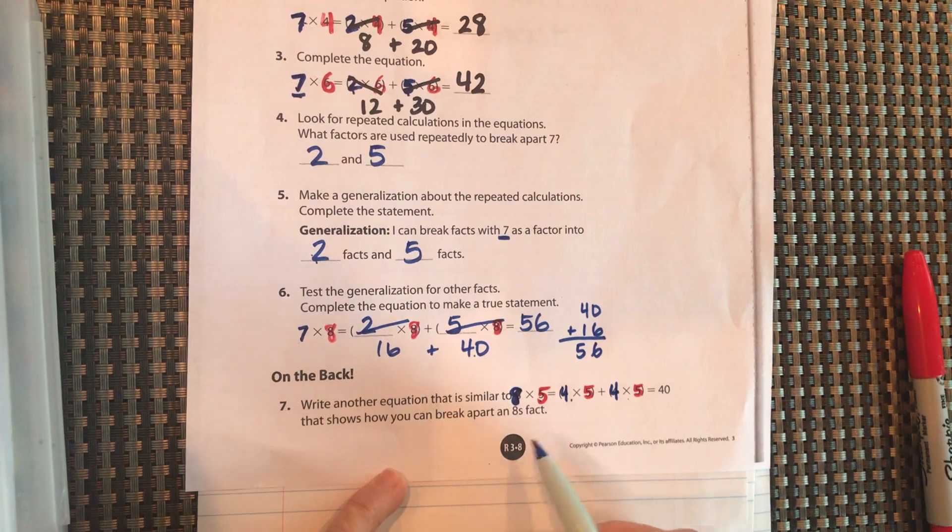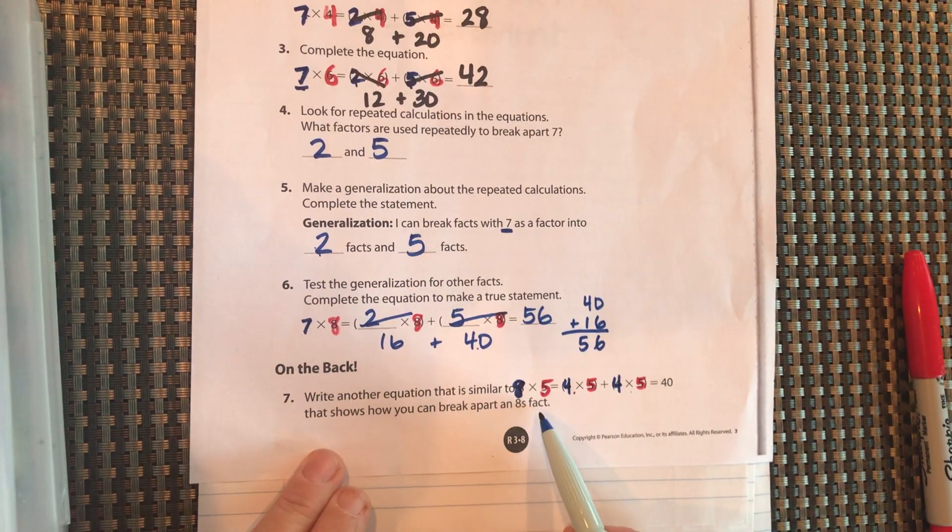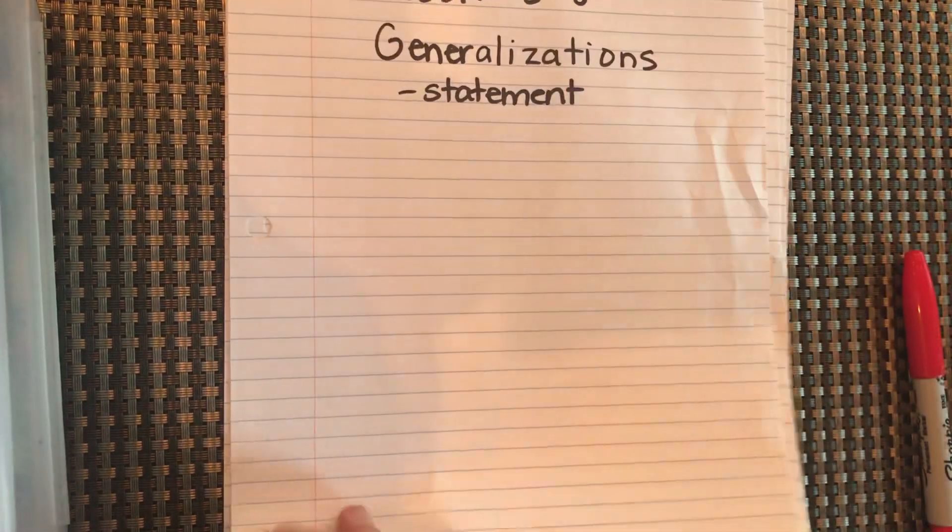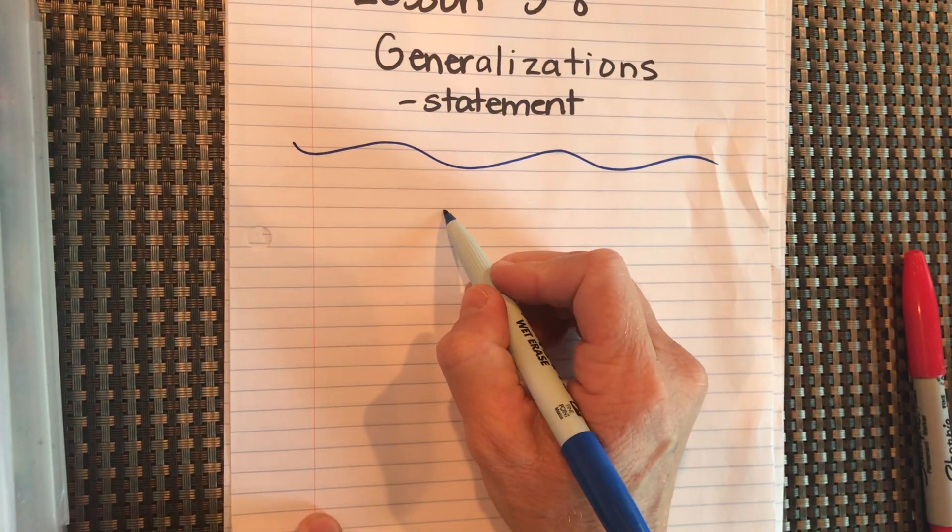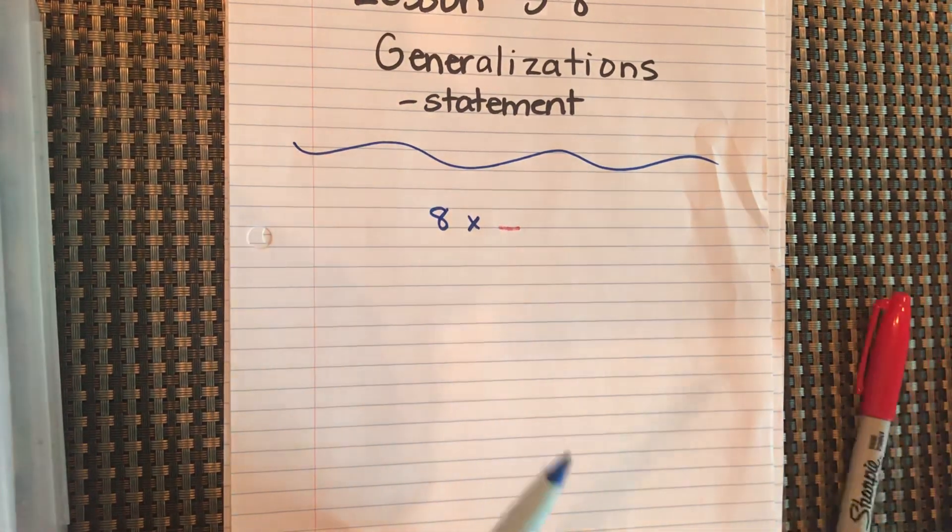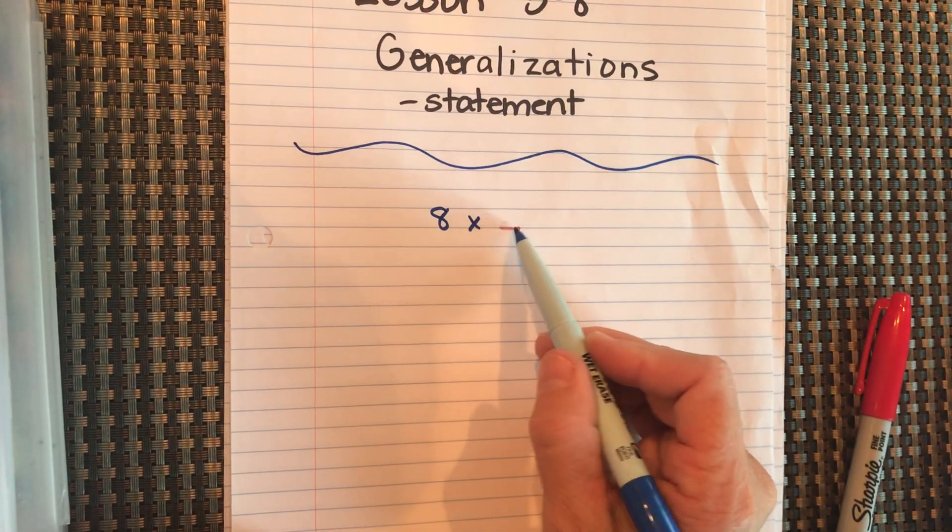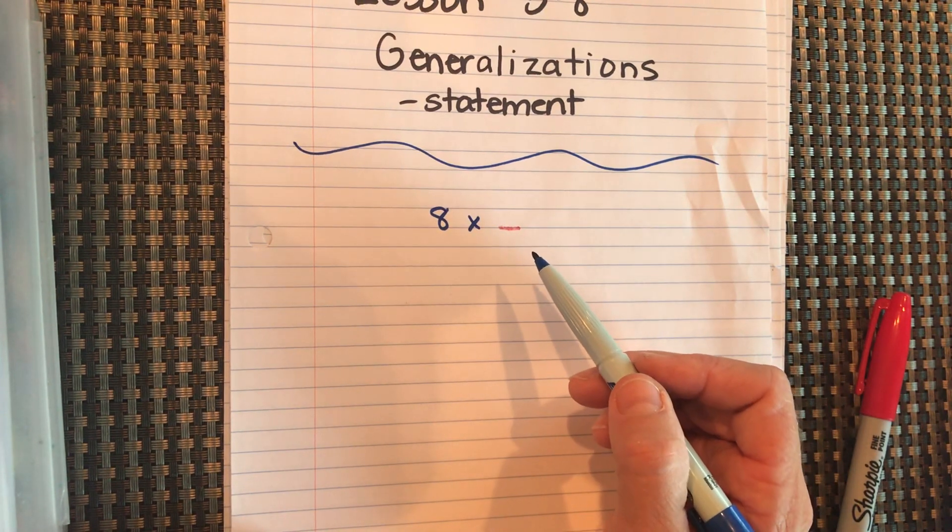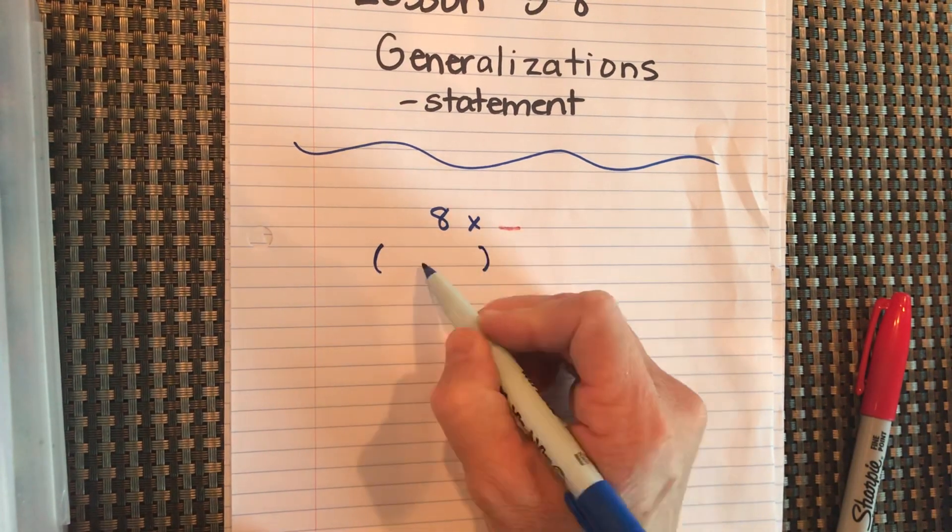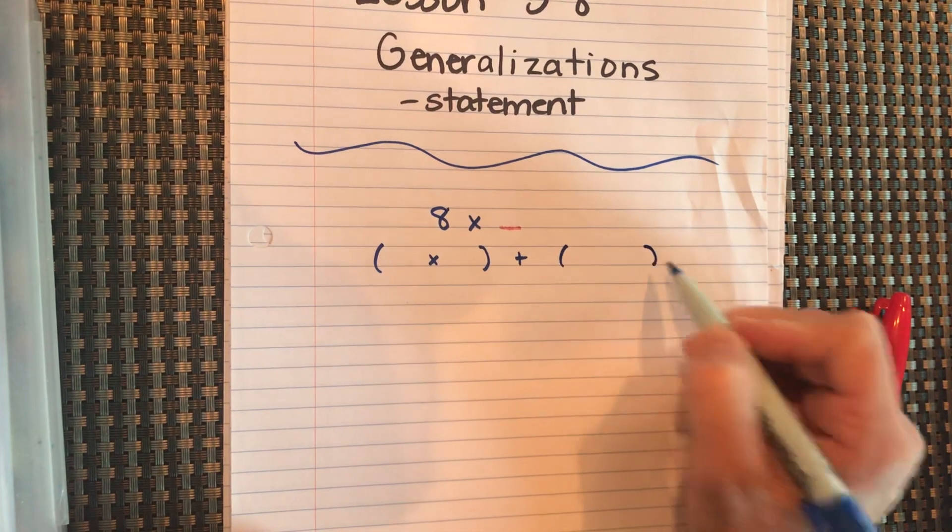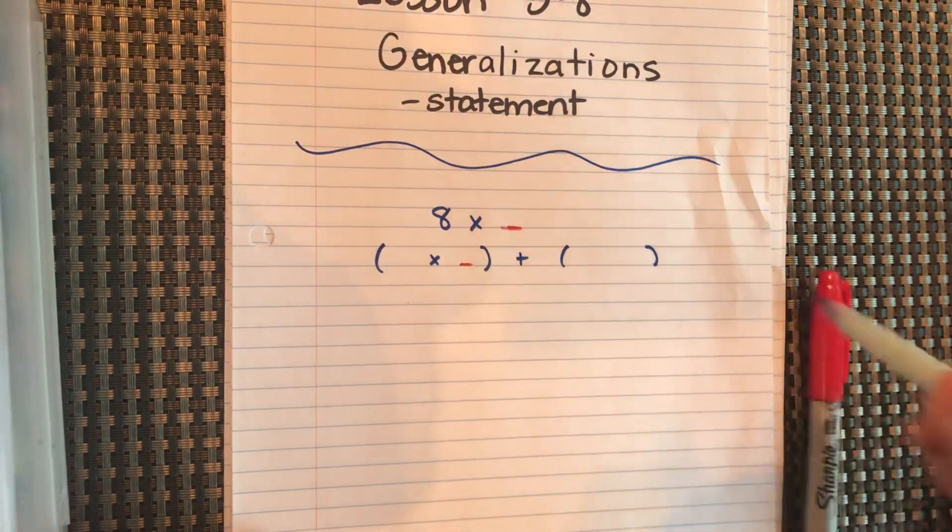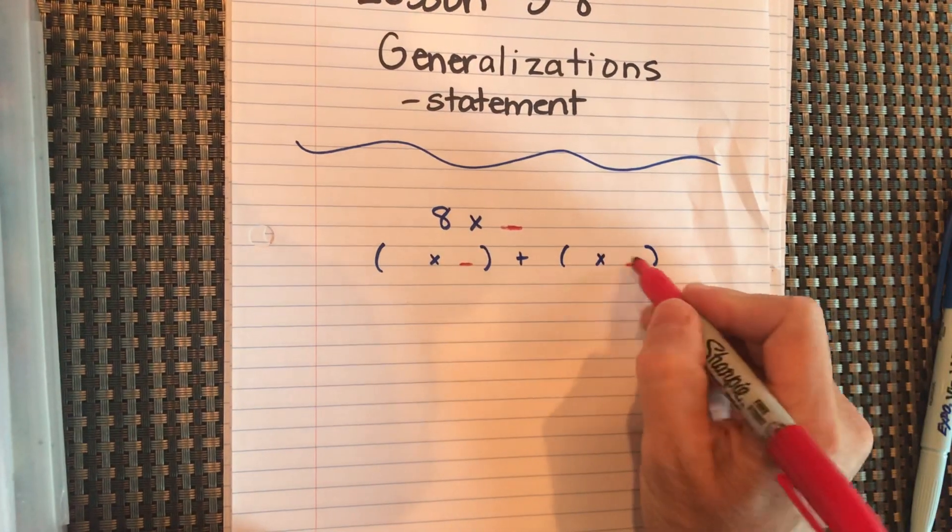So on the back, I want you to write an 8 multiplication fact. So it needs to be 8 times something. So write a number there, any number. Okay, so now you need to break this up. Whatever this number is should stay the same. Should stay the same. Right here, right here. Whatever that number is.